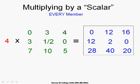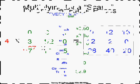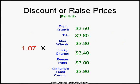Let me give you a quick example of what you might use scalar multiplication for. Suppose you wanted to raise the prices of all your products. You would multiply that price matrix by a scalar of 1.07 — to raise the price by 7% — and that would multiply every member by 1.07, basically raising the price of all your products.